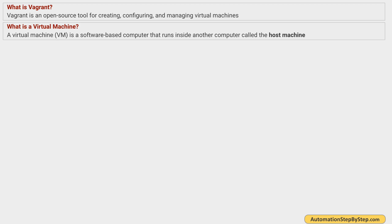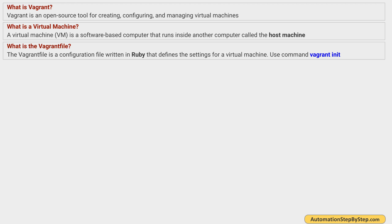What is a virtual machine? A virtual machine, or VM, is a software-based computer. It is not a real machine but a virtual one, and it runs inside another computer that we call the host machine. The computer where we create the virtual machine is called the host machine, and the virtual machine can also be called the guest machine.